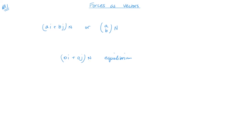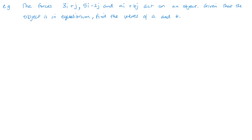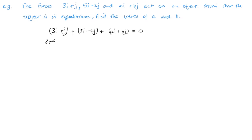Let's jump into the first example. We have the forces 3i plus j, 5i minus 2j, and ai plus bj acting on an object. Given that the object is in equilibrium, we need to find the values of a and b. That means if we total them up: 3i plus j plus 5i minus 2j plus ai plus bj must equal zero. Collecting the i components gives three plus five plus a.